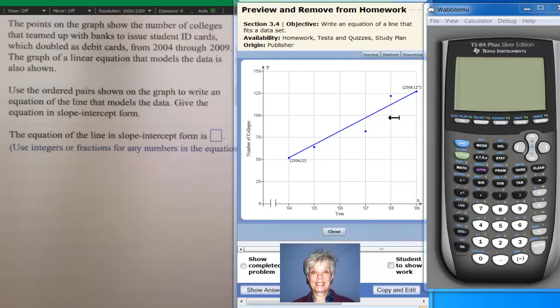Here's the problem. I'm going to read the problem out loud. The points on this graph show the number of colleges that teamed up with banks to issue student ID cards, which doubled as debit cards from 2004 through 2009. The graph of a linear equation that models the data is also shown. That's this graph right here.